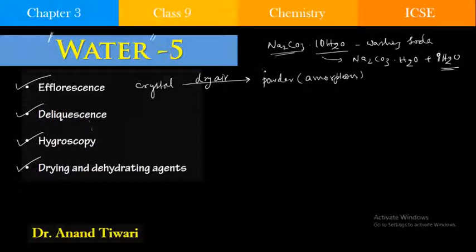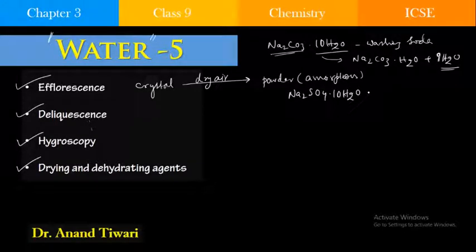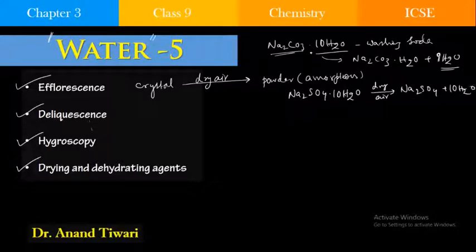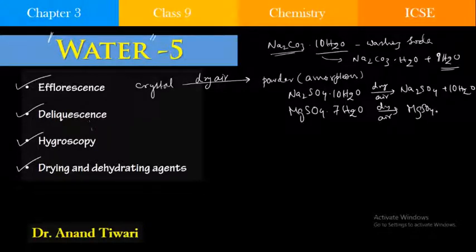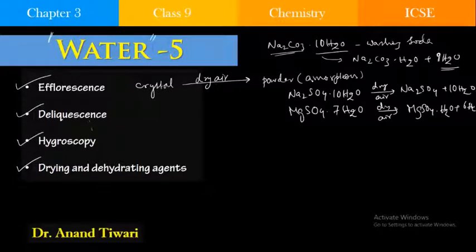There is another example called Glauber's salt, that is sodium sulfate. When sodium sulfate is exposed to dry air, it will lose completely its water of hydration. Washing soda converts into monohydrate form, whereas Glauber's salt — sodium sulfate decahydrate — loses the complete water of crystallization. Epsom salt, that is magnesium sulfate·7H2O, in dry air will become MgSO4 monohydrate. So on exposure to dry air, the crystal converts into an amorphous form, losing the water of crystallization either completely or partially.